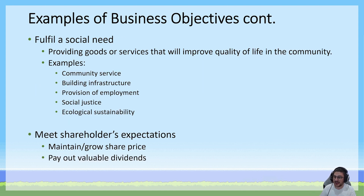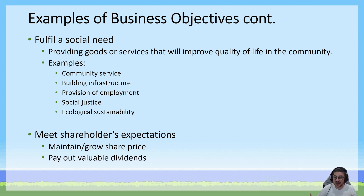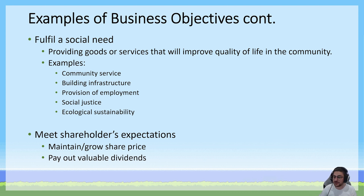Fulfilling a social need means providing goods or services that improve the quality of life for individuals or a community as a whole. Many businesses have the objective to fulfill a social need through things like providing community service leave to employees, building community infrastructure, providing employment to groups that typically face challenges gaining meaningful employment, pursuing social justice causes — such as those associated with the Black Lives Matter movement or the MeToo movement — or pursuing ecological sustainability.